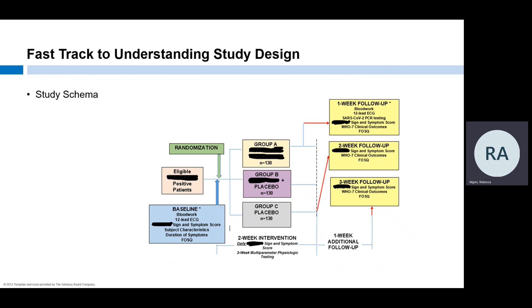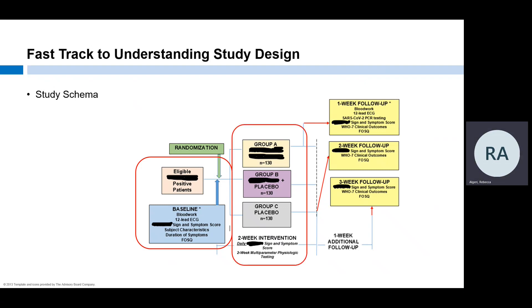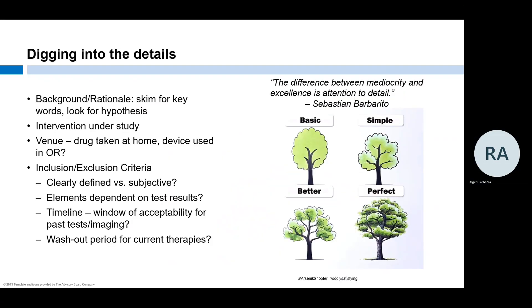Since the study schema serves as a flow chart of the overall study design, it's a great visual tool to leverage while learning a protocol. In this schema, we can see that eligible subjects will have a baseline visit with several assessments, a blood draw, and an ECG. They'll be randomized into one of three groups, and the treatment period will last two weeks. Subjects will then enter the follow-up period, which will last three weeks. Using the title and the schema, we now have a basic understanding of the study design without even getting to the schedule of events.